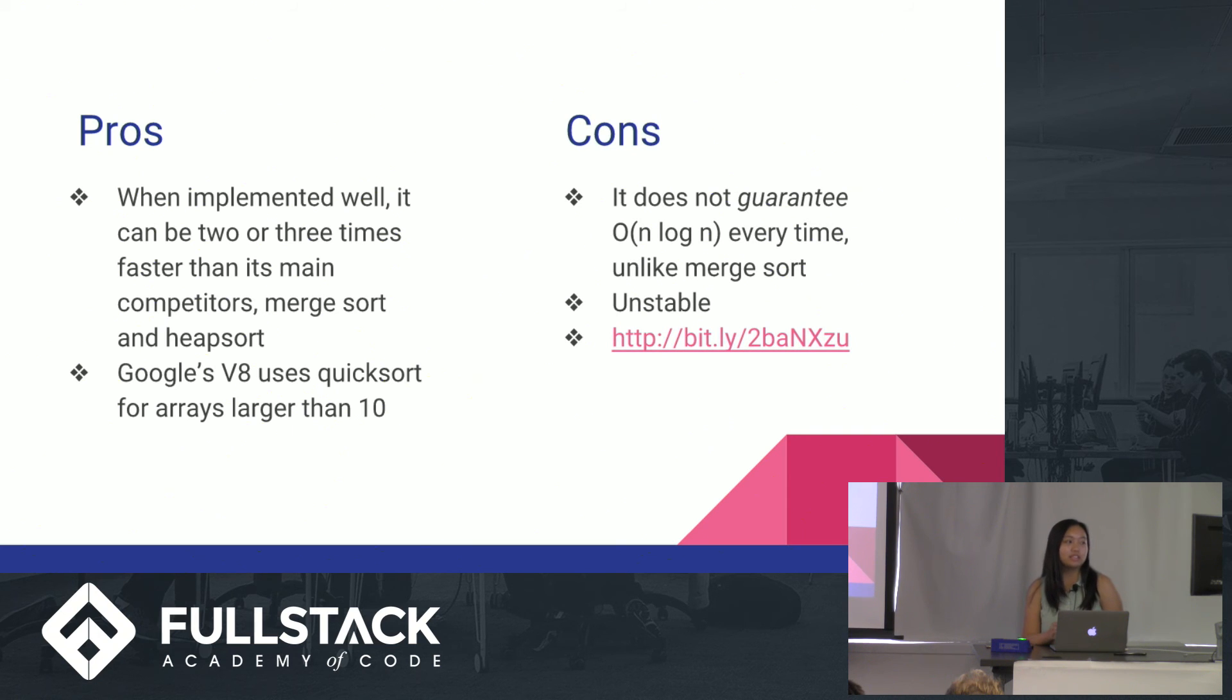Cons to quicksort is that it does not guarantee O of n log n time every time. Unlike merge sort, which is always O of n log n no matter what, because it always divides it into singletons and puts it all back together no matter how sorted the array is. Quicksort is also unstable, which means that if an array has a bunch of values that are equal, in the sorted array, those equal values could end up switching positions. It's possible for them to switch positions even though they are equal in value. That could be a con because there's unnecessary swapping and that decreases run time.